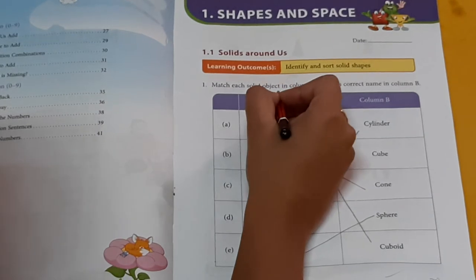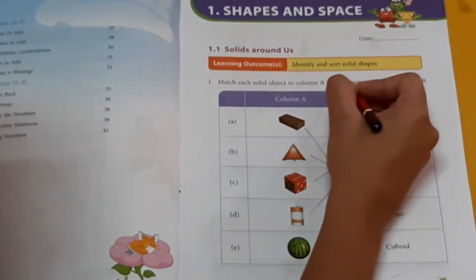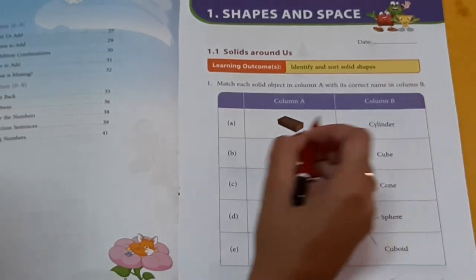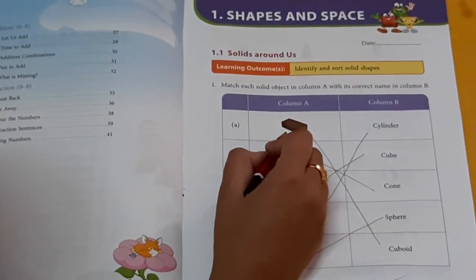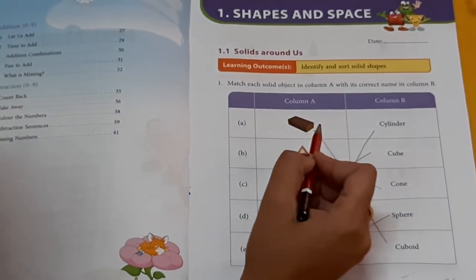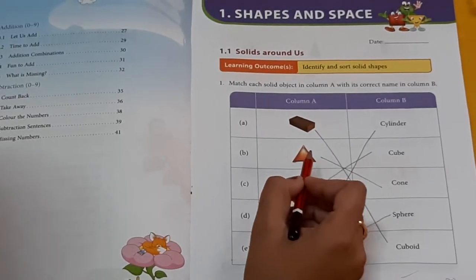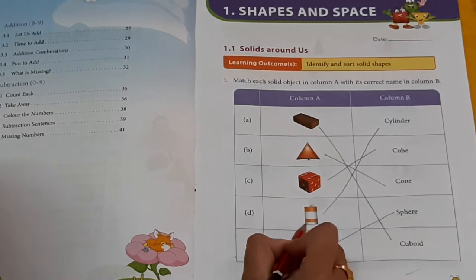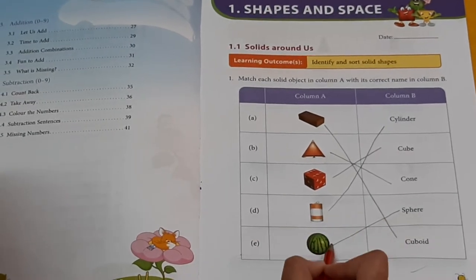First question. Match each solid object in column A with its column name in column B. Which shape is this? Cuboid. Cone. Cube. Cylinder. Sphere.